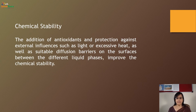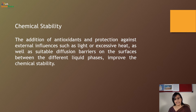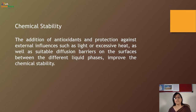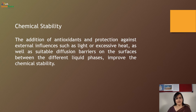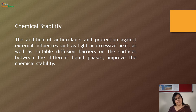Chemical stability: chemical instability occurs because of oxidation of fats and oils. Addition of antioxidants and protection against external influences such as light and excessive heat, as well as a suitable diffusion barrier on the surface between the different liquid phases, improves the chemical stability. Chemical stability can be improved by using antioxidants and by preventing exposure to external environmental factors like light and excessive heat.